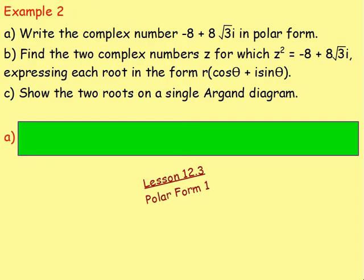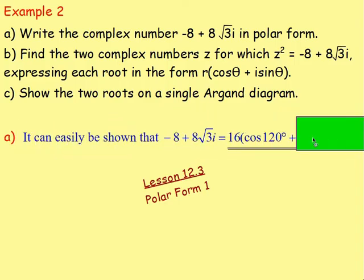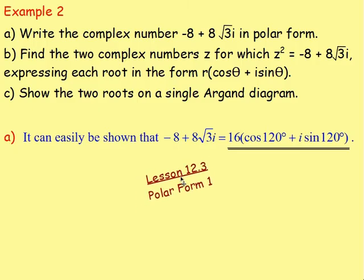Example 2: write the complex number -8 + 8√3i in polar form. For part A, look back to example 12.3 if you're unsure about converting from x + yi into polar form. The answer is that -8 + 8√3i can be written as 16(cos120 + i·sin120).